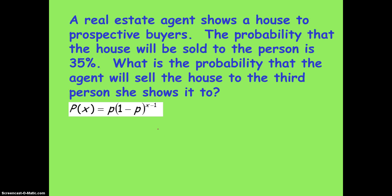Let's try a practice example. A real estate agent shows a house to prospective buyers. The probability that the house will be sold to a person is 35%. What is the probability that the agent will sell the house to the third person she shows it to? Looking at this problem, we see there is no fixed number of trials, but there is a constant probability of success — 0.35 — and a desired number of trials to reach success: 3.